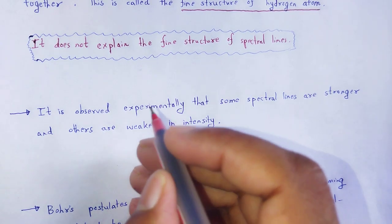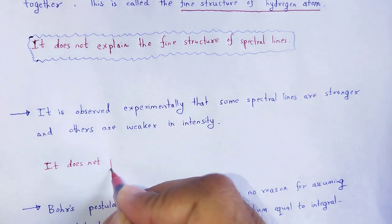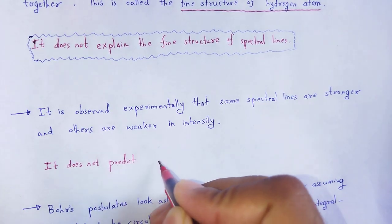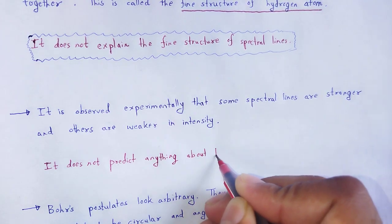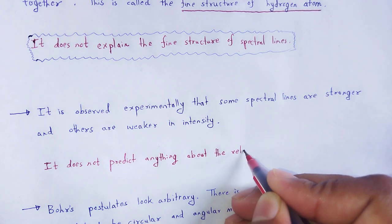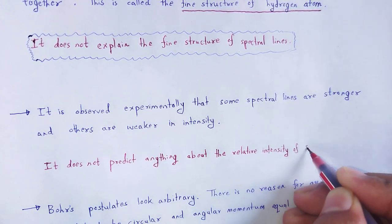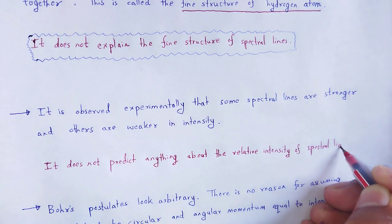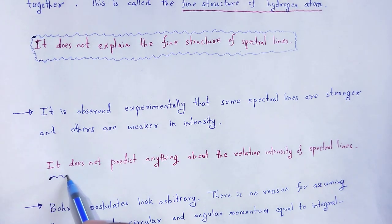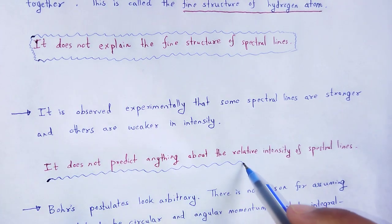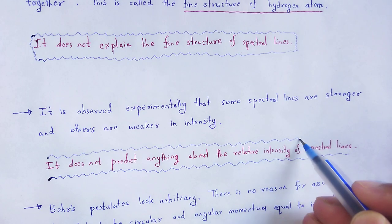Bohr's model does not predict anything about the relative intensity of spectral lines — how these spectral lines behave under strong as well as weak electric field and magnetic field. This is another drawback of Bohr's theory of atomic model: not predicting the relative intensity of spectral lines.